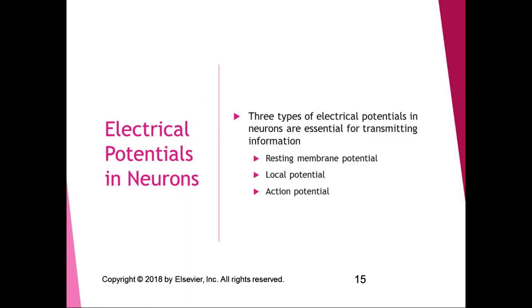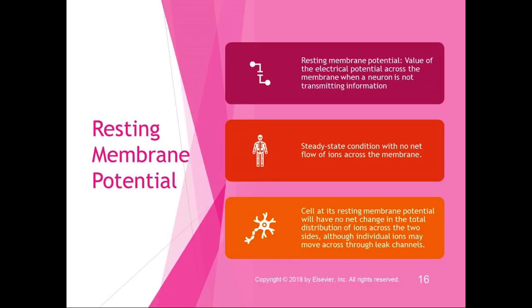There are three types of electrical potentials in neurons that are essential for transmitting information: the resting membrane potential, local potentials, and action potentials. The resting membrane potential is the difference in electrical potential across the membrane when the neuron is not transmitting information.